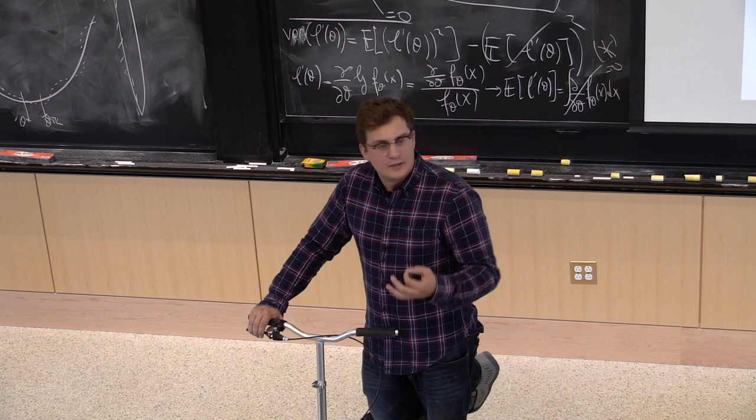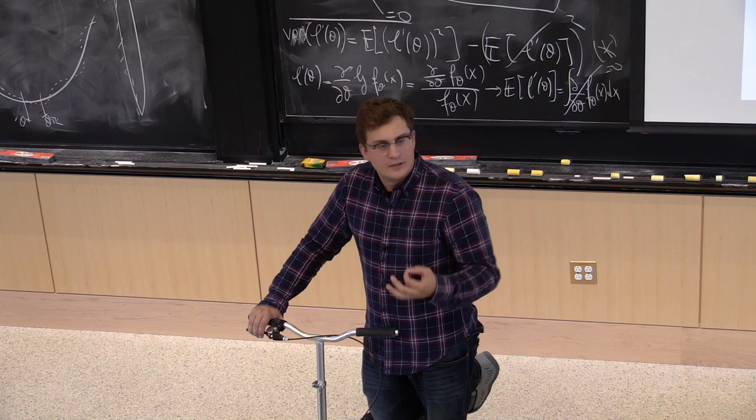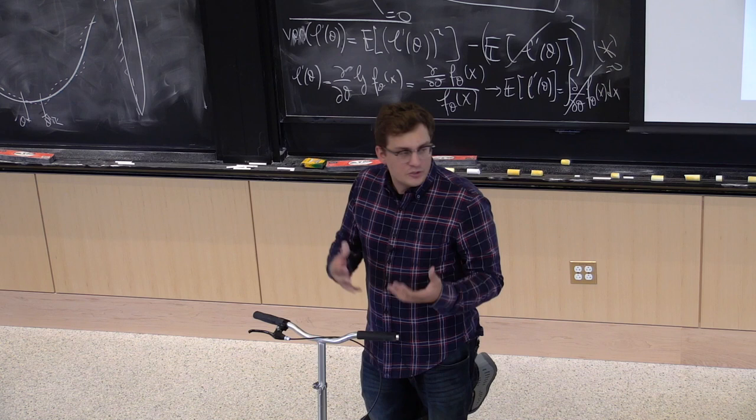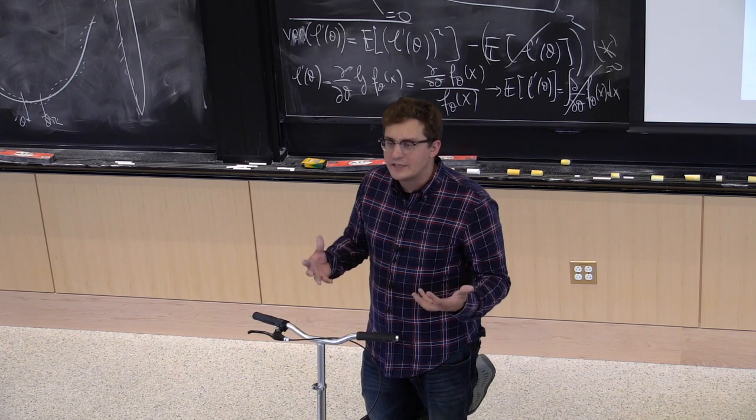There should be some statement that tells us the Fisher information plays a role when assessing estimator precision. How do we characterize a good estimator? We look at its bias, or its variance, and combine them to form the quadratic risk. The variance or quadratic risk is going to be worse if the function is flatter — meaning the Fisher information is smaller.